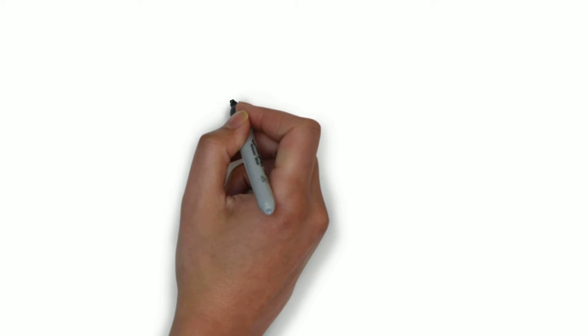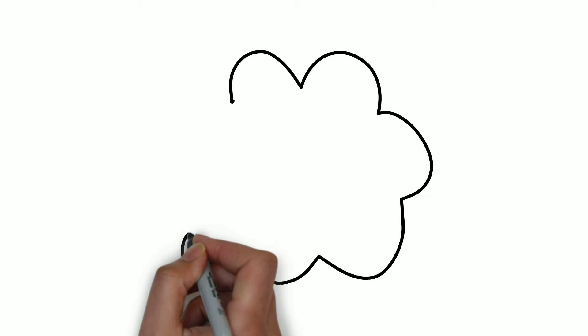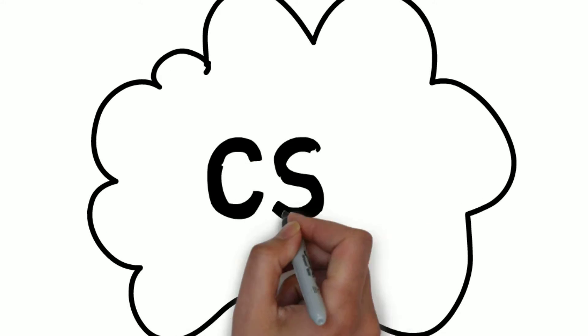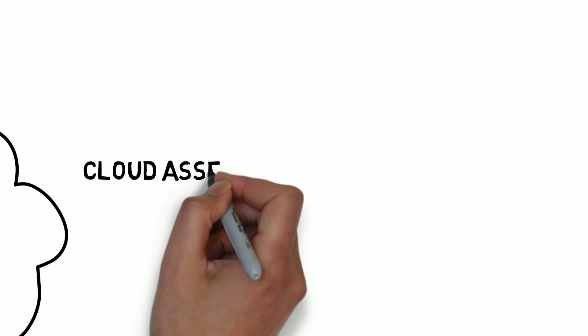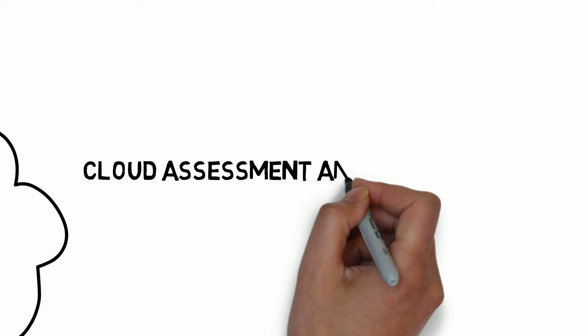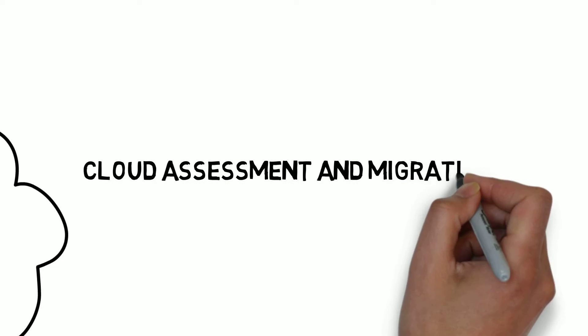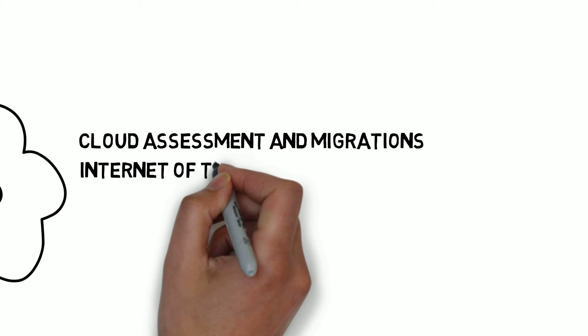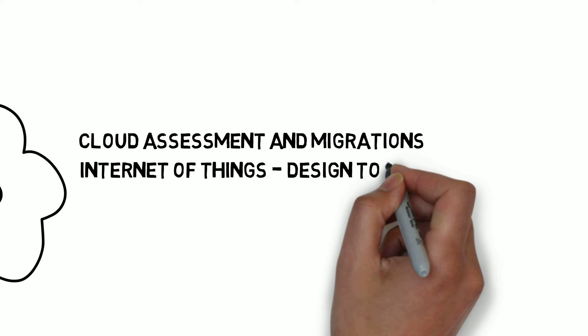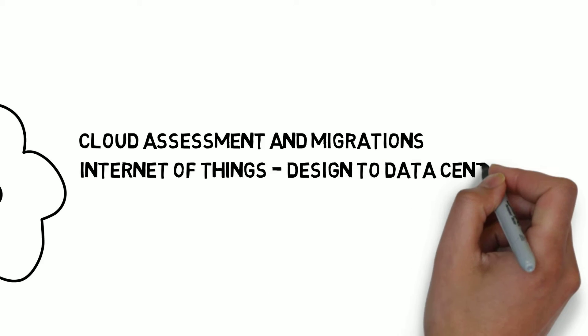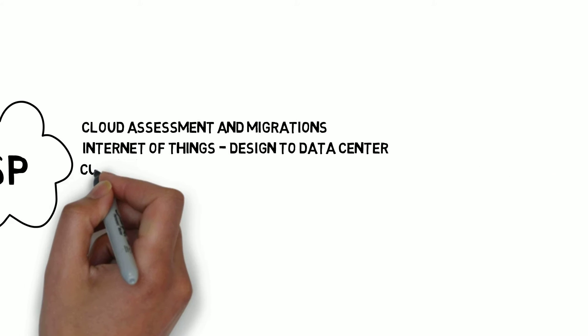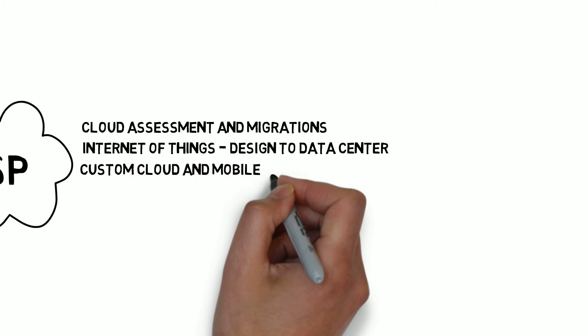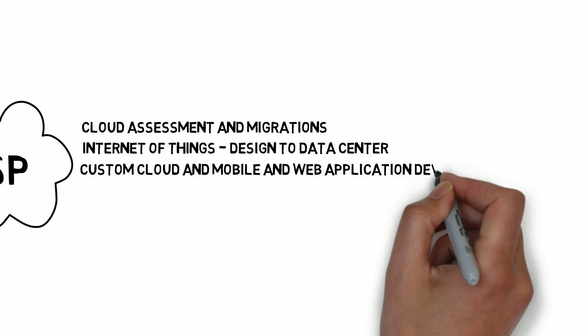OST also provides a full range of cloud services in addition to the Microsoft CSP service. For instance, we perform cloud assessments to help you decide which of your applications and services should move to the cloud and which should not, as well as which are ready to move to the cloud. Once you've decided to move applications or services to the cloud, we can plan and execute the migration for you. We also have a robust Internet of Things practice, which can assist you from design to data center and all points in between.